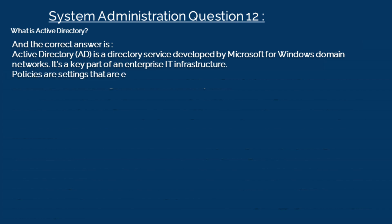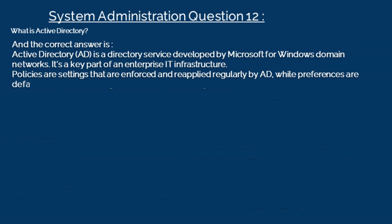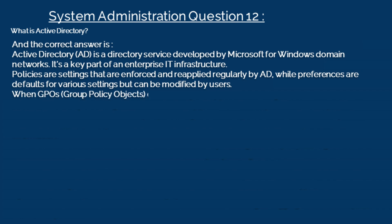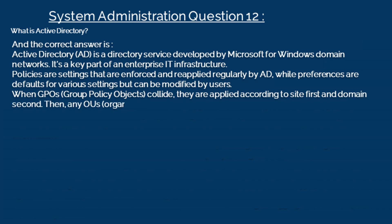Policies are settings that are enforced and reapplied regularly by AD, while preferences are defaults for various settings but can be modified by users. When GPOs, or Group Policy Objects, collide, they are applied according to the site first and domain second, then any OUs (Organization Units) are applied from least specific to most specific.